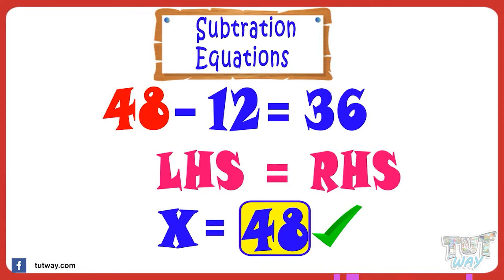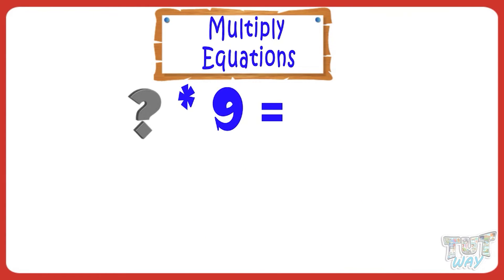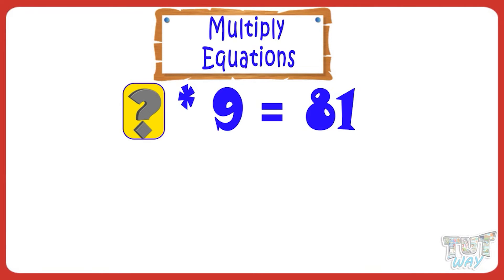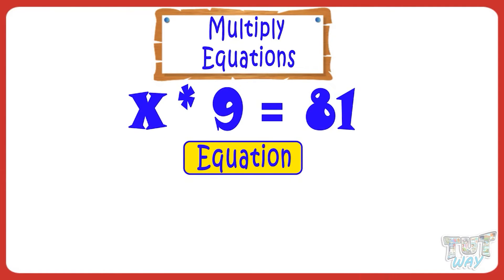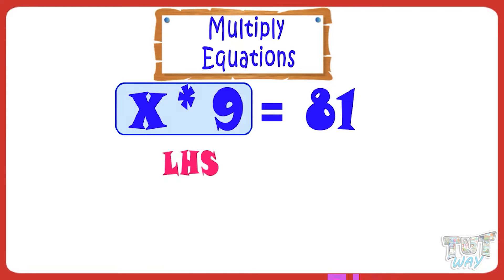Now let's take another equation. If we multiply 9 by a number, it gives 81. Then what is the number? We can write this in the form of an equation: X multiplied by 9 equals 81. That is, any number multiplied by 9 gives 81, and we have to find the number. Here, X multiplied by 9 is LHS, and 81 is RHS.